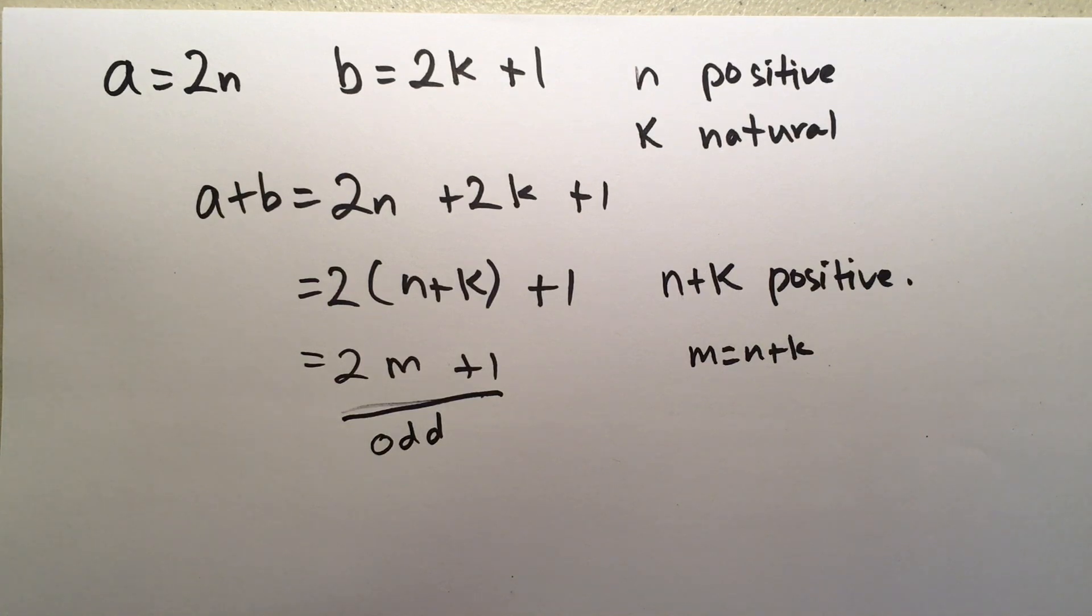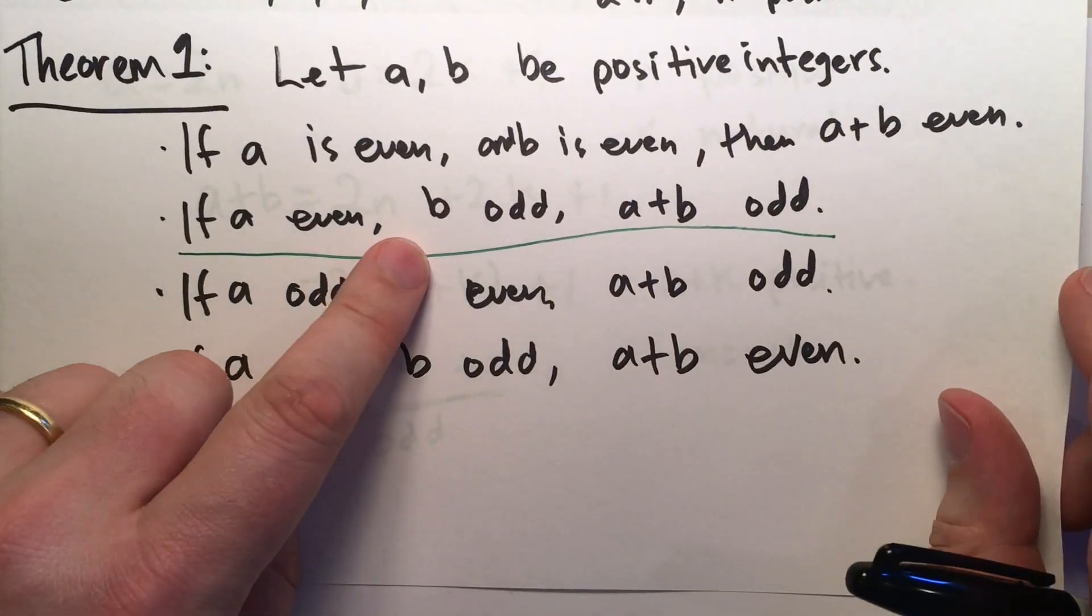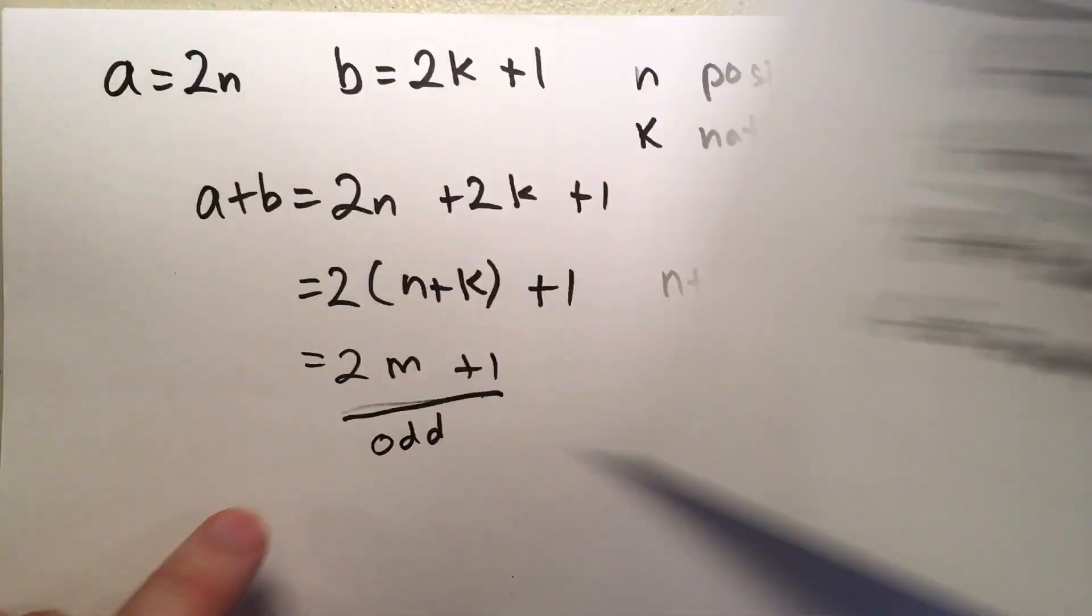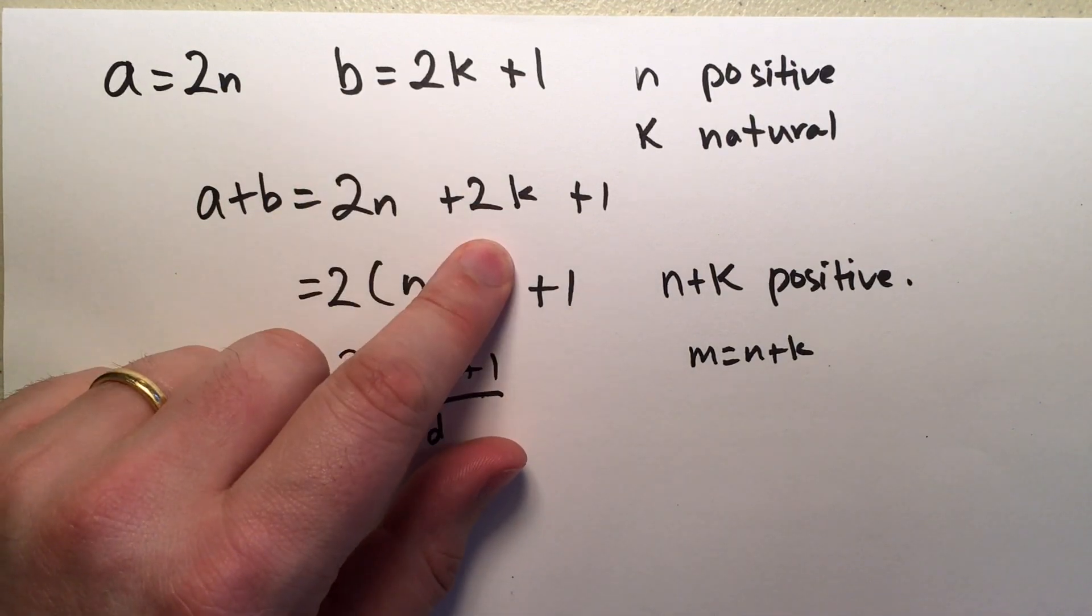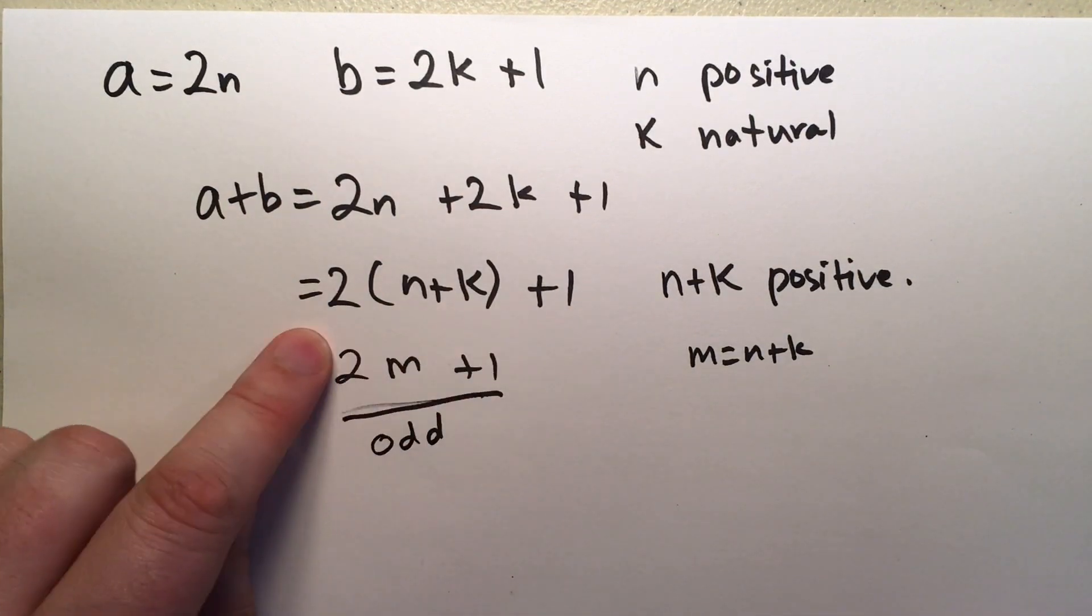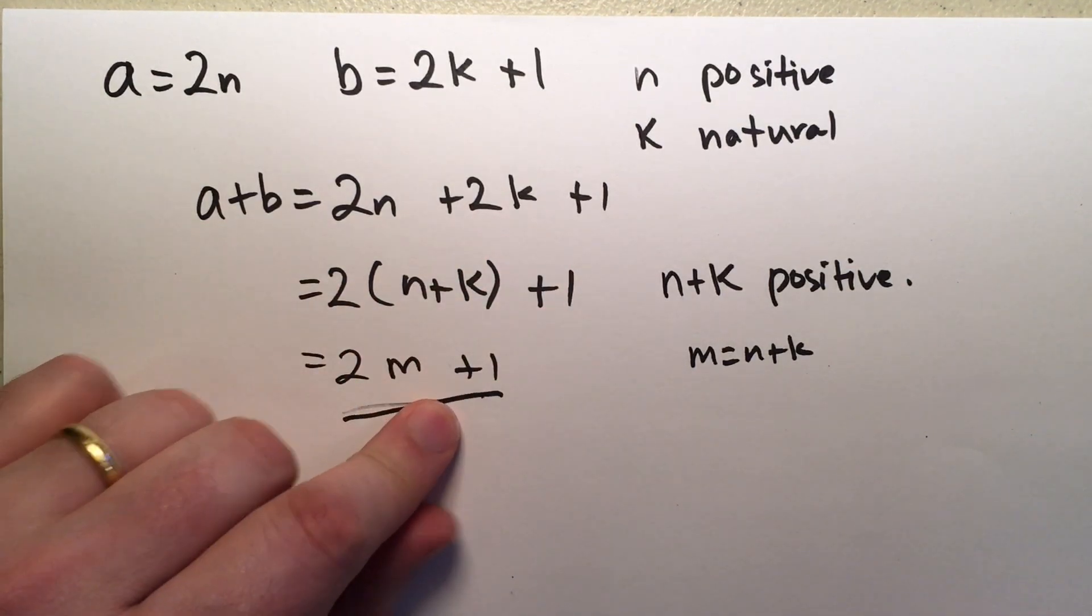That's the definition for odd. 2 times some number plus 1, then it's odd. So, that's how we prove that for that second line, if A is even and B is odd, then A plus B is odd. We've shown, we plugged in the even for A, the odd for B. We factored out the 2, and we noticed we had this extra 1 left over, which means that it's odd.